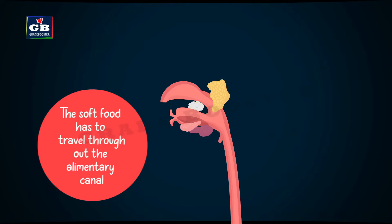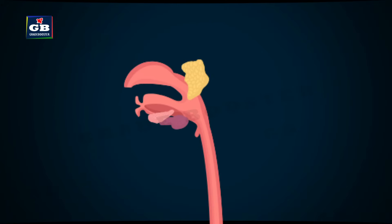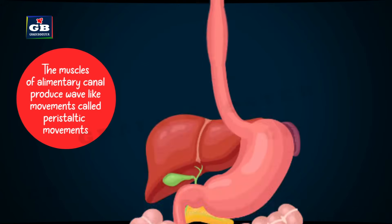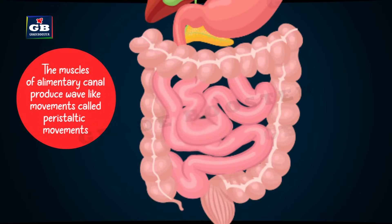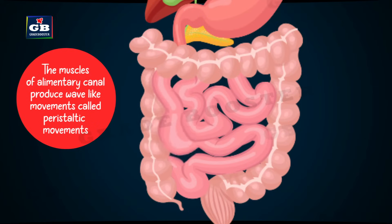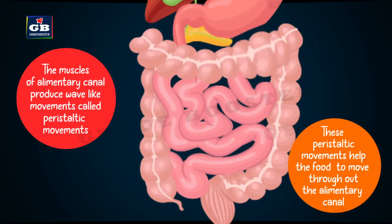This bolus, that is the soft food, has to travel throughout the alimentary canal. The muscles of the alimentary canal produce rhythmic contractions and relaxations. These contractions and relaxations create a wave-like movement called peristaltic movements. These peristaltic movements help the food to move throughout the alimentary canal.